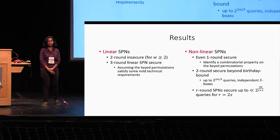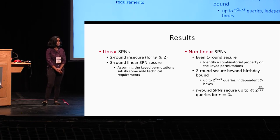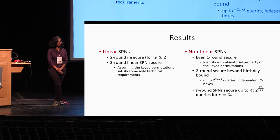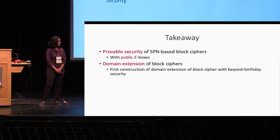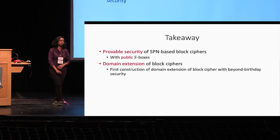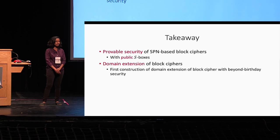We show results on both linear and nonlinear SPNs. A three-round linear SPN is secure up to the birthday bound under mild assumptions on the permutation step. To reduce the number of rounds, we focus on nonlinear SPNs, where even a one-round nonlinear SPN is secure. Furthermore, we can go beyond the birthday bound in the nonlinear SPN setting. The takeaway is that provable security of SPNs, especially in the public S-box setting, has not been a focus — we address that, and our results also imply domain extension of block ciphers with beyond-birthday-bound security.